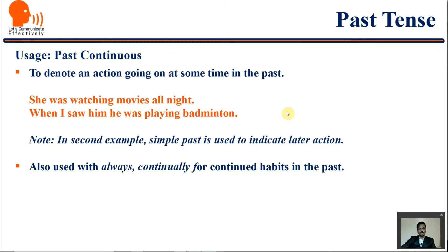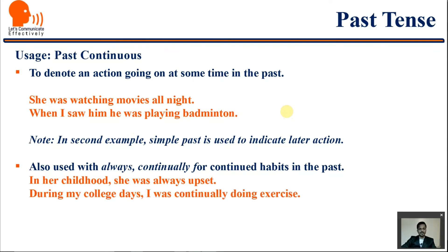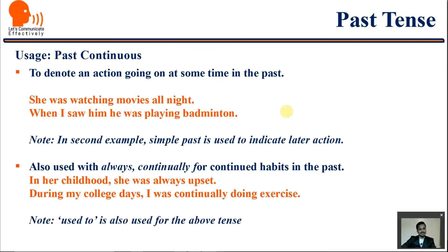Past continuous is also used with 'always' or 'continually' for continued habits in the past. For example: 'In her childhood, she was always upset.' 'During my college days, I was continually doing exercise.' For these sentences, we can also use 'used to': 'In her childhood, she used to be upset.' 'During my college days, I used to do exercise.'